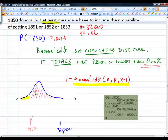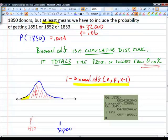So what this means is, to answer the question of what's the probability of getting at least 1,850, I wanted to include that 1,850th person over here. So I had to take away all the way up to the 1,849. That's using a binomial CDF.